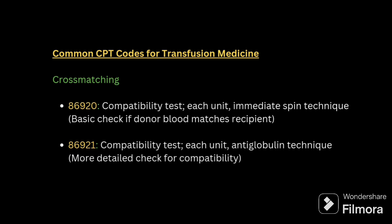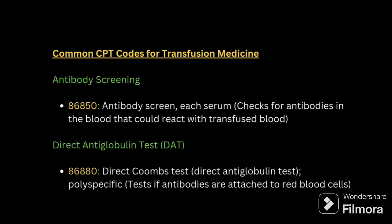For antibody screening, the code is 86850 — antibody screen, each serum — which checks for antibodies in the blood that could react with transfused blood. The direct anti-globulin test is coded 86880, also known as the direct Coombs test.